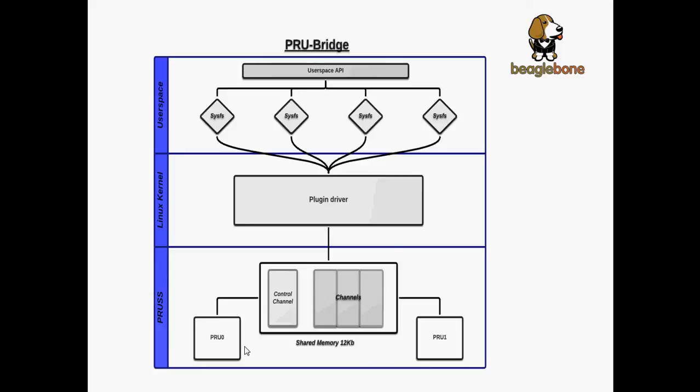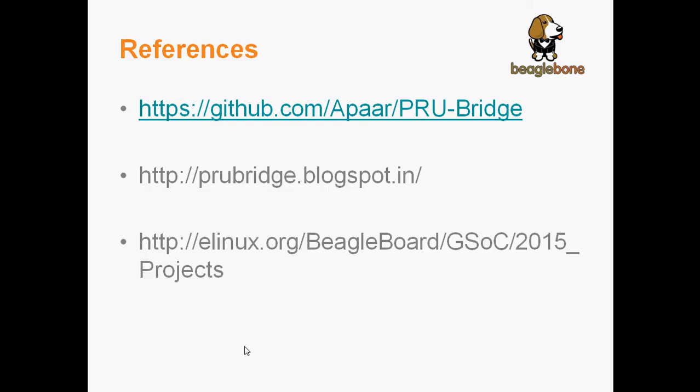This is the basic architecture of PRU Bridge. At the top we have the user space APIs which interact with the SysFS files, which provide channels of communication via the plugin driver to the shared memory, which finally helps in exporting data to the PRU and from the PRU back to the driver, which in turn takes it to the user space APIs. To follow this project, you can check prubridge.blogspot.in or my GitHub repo. Thank you for your time.